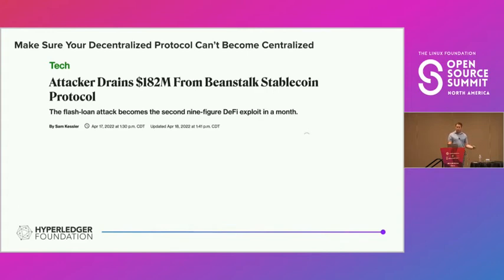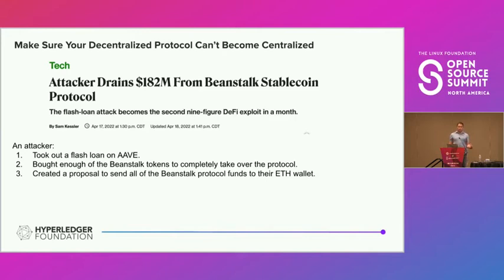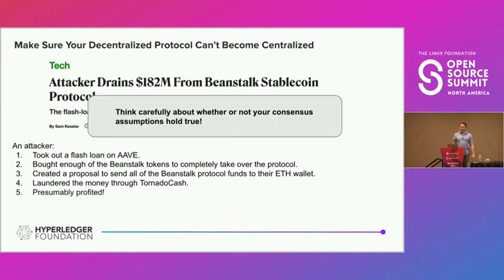It's important to make sure your decentralized protocol can't become centralized. The beanstalk attack was very clever and actually legal — within the governance of the beanstalk protocol. An attacker took out a flash loan — a very fast loan where you get cash and repay super quickly — bought enough of the beanstalk governance tokens to have more than 51% of the stake, created a proposal to send all protocol funds to their ETH wallet, which they then passed because they had all the stake, laundered the money, and profited. Beanstalk assumed there would never be a single entity controlling more than half of its voting rights, but that was obviously not the case.